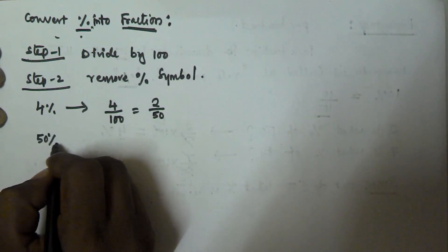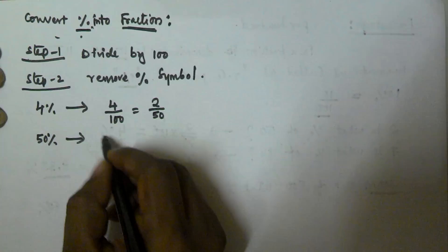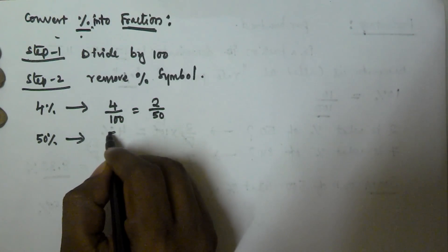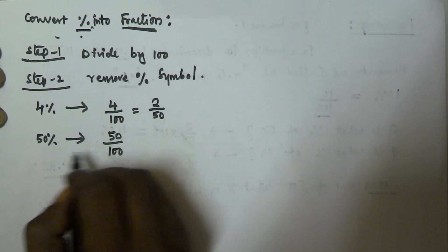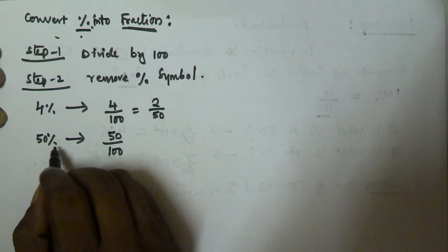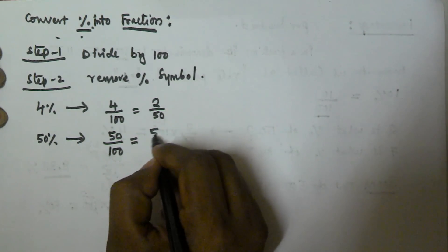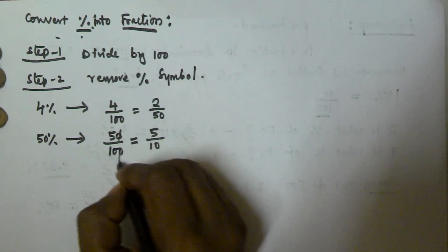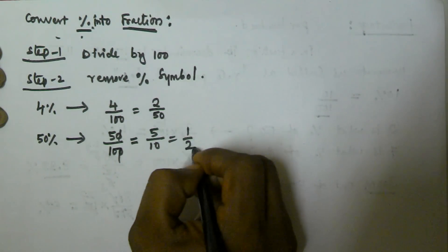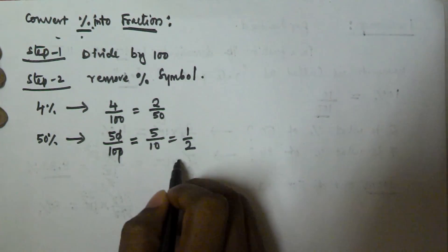Now let's look at 50% into a fraction. We divide by 100 and remove the percentage symbol. 50/100 is equivalent to 5/10, which simplifies to 1/2. So 50% is equivalent to 1/2.